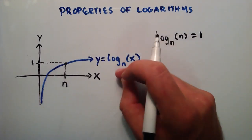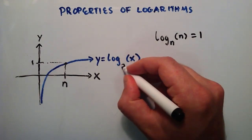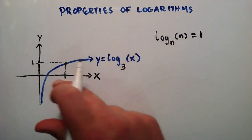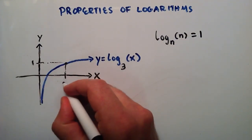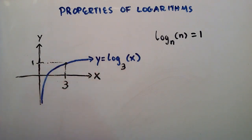So for instance, if this was log base 3 of x, then that means you would have to go over 3 units to get a corresponding y value of 1.